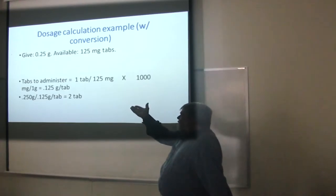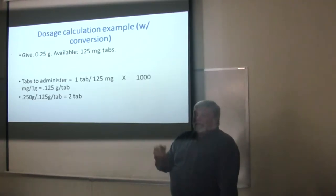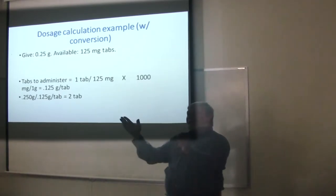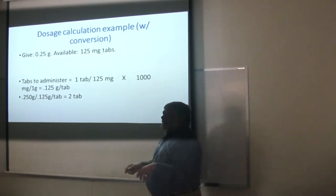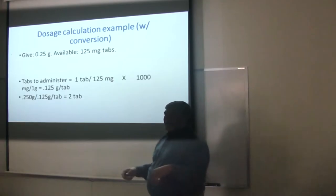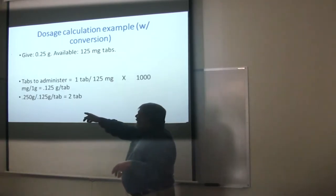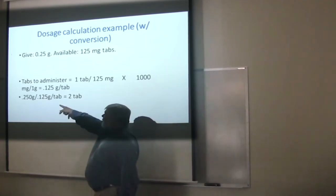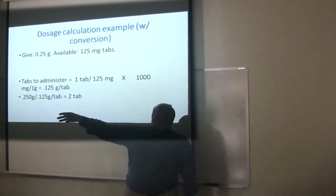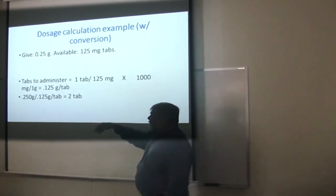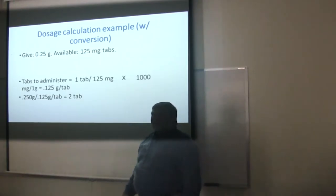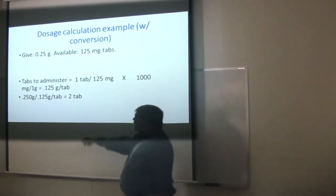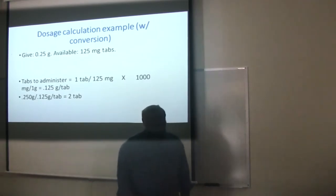If a tablet is 0.125 grams or 125 milligrams, all we did was move that decimal point three places. We have an order for 0.25 grams. You should always have a preceding zero — it should be 0.25 grams. How many times does 0.125 go into 0.25? Twice. So we cancel out the grams and end up with 2 tablets.